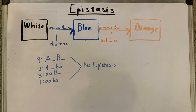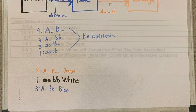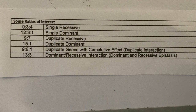Just a special note: when epistasis is not occurring, the ratio will always be nine to three to three to one. If you recall our cross, the resulting ratios are nine to four to three. And when referencing our table, nine to four to three is a single recessive epistasis.